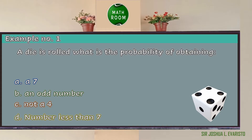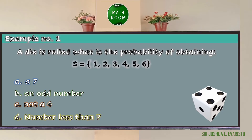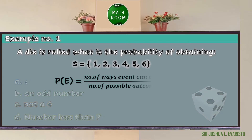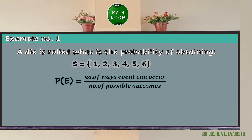In rolling a die, the possible results are 1, 2, 3, 4, 5, and 6, so the sample space is S = {1, 2, 3, 4, 5, 6}. Using the formula — number of ways the event can occur over the number of possible outcomes — the probability of getting a 7 is 0 over 6, since the faces of a die do not have a 7. Zero over 6 equals 0. In probability, 0 means impossible. Thus, the probability of getting a 7 when you roll a die is impossible.